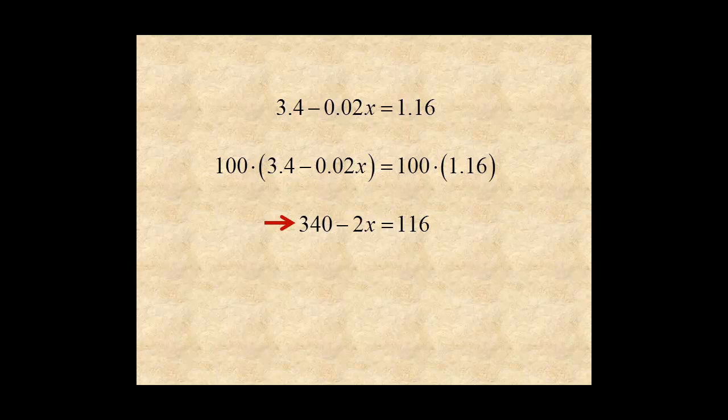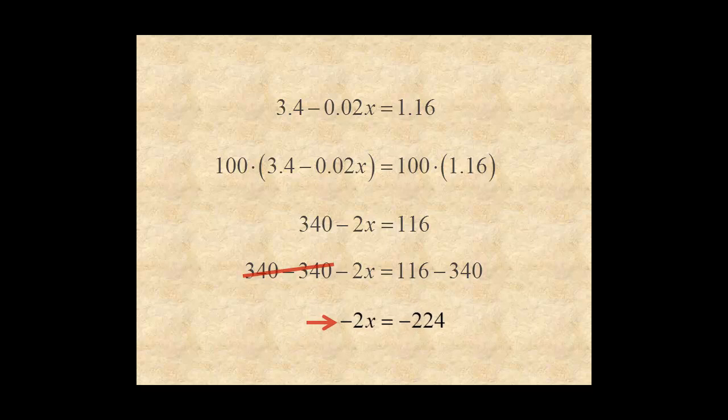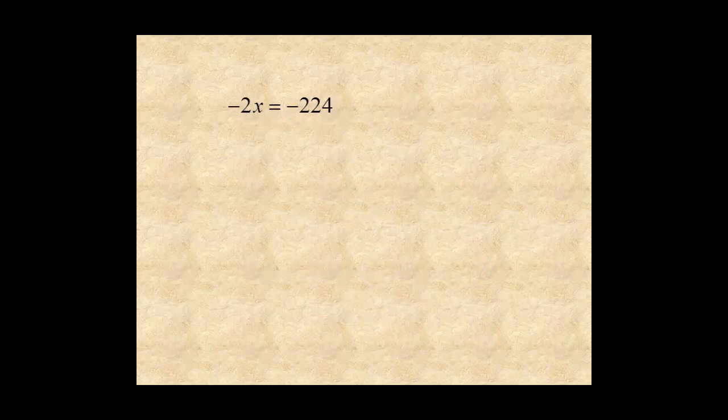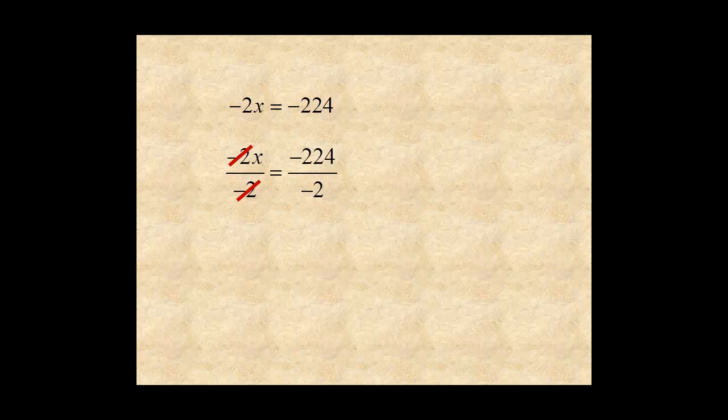Next, subtract 340 from both sides of the equation for negative 2x equals negative 224. Then divide both sides by negative 2 for the solution x equals 112.